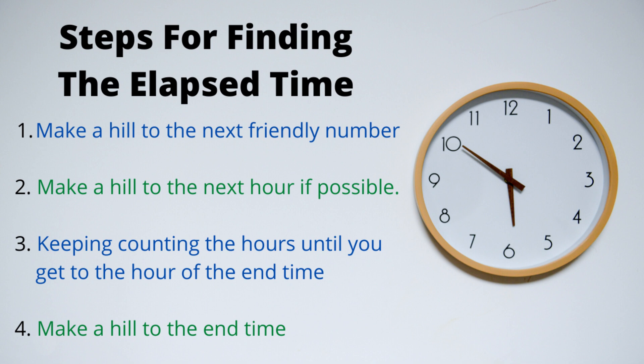From there, if you're going to be crossing over an hour, you want to go to the next closest hour. And you want to keep jumping hours until you get to the hour of the end time. And then we're going to go to the end time. So you're going to have several different pieces to your timeline. And at the end, we're going to add up all the time that we jumped, that's on our timeline, and that will be our elapsed time.